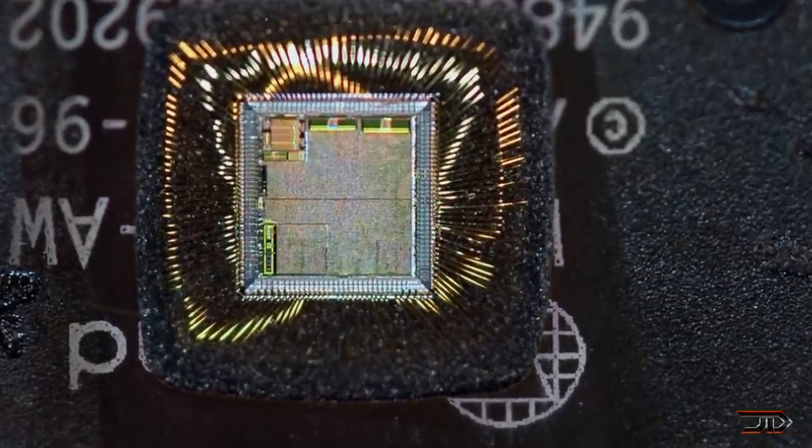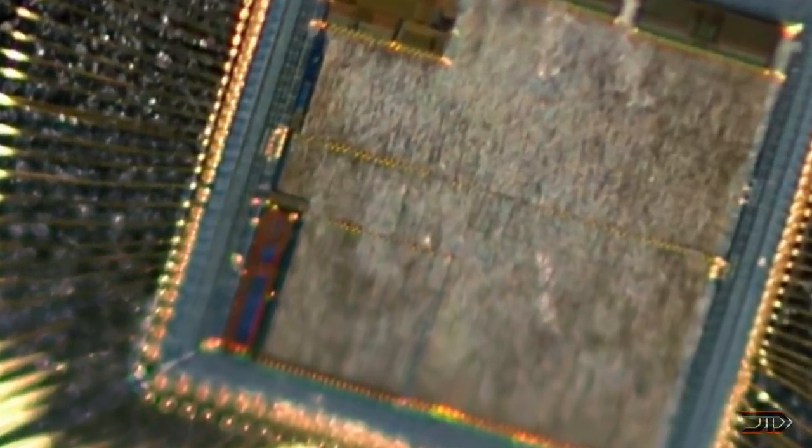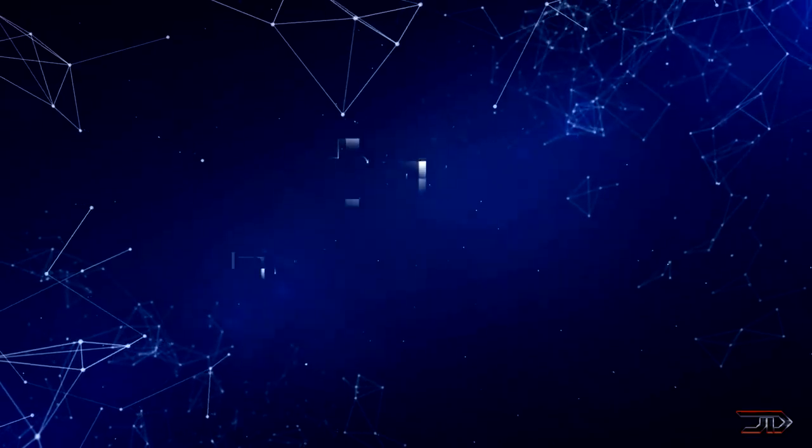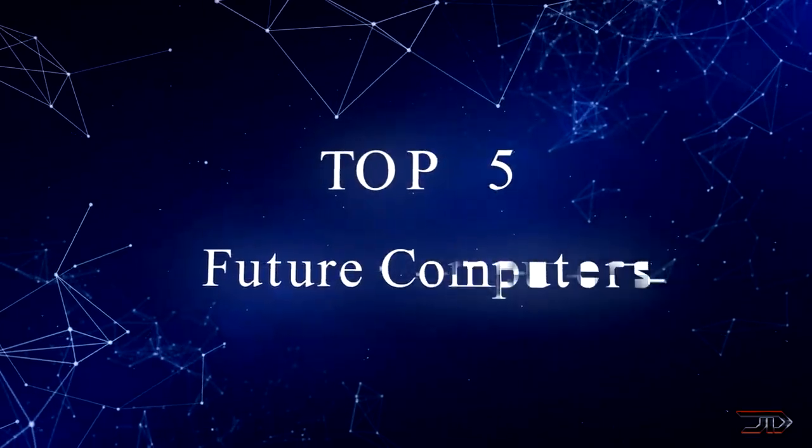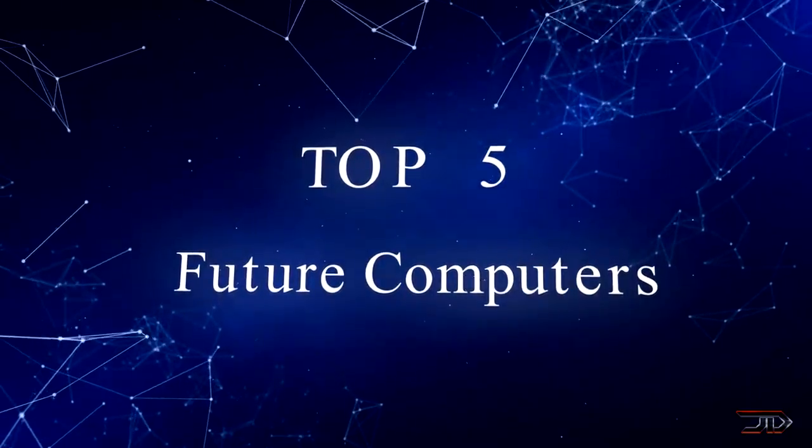Chip makers are constantly trying to find out how to dodge this ultimate limitation with different kinds of gate setups and multicore integration. But the end is coming, and the end of Moore's Law is inevitable. This leads me to five alternative options which may replace silicon.